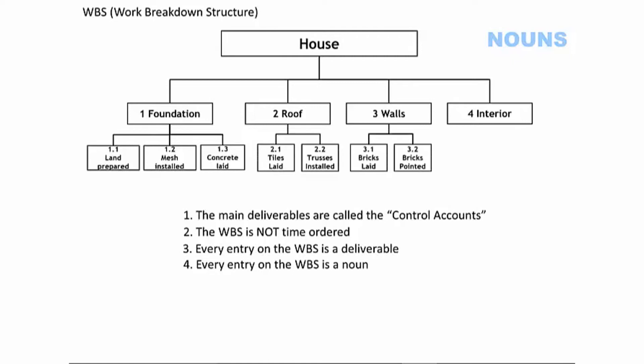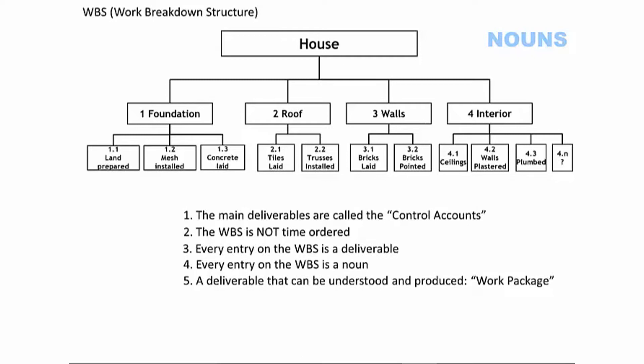Work packages are deliverables that are simple enough to be understood and produced. Item 1.2 — mesh installed — you cut steel mesh to fit the excavation and perhaps weld pieces together, so that is a work package. Item 1.3 — concrete laid — a truck pours concrete, it gets spread and smoothed, so that is also a work package. A work package does not get decomposed any further. But item 1.1 — land prepared — probably needs more decomposition.